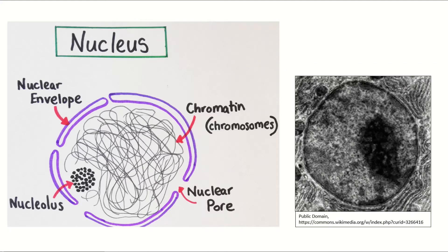There is a darker section inside the nucleus. This is the nucleolus, where ribosomes are made. Lots of nuclear pores can be found in the nuclear envelope, and these allow molecules to enter and leave the nucleus.